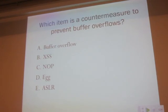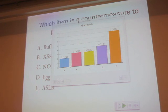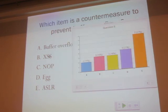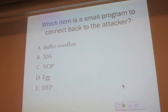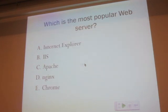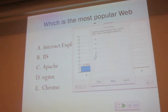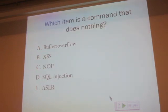Quiz review: The countermeasure to prevent buffer overflow exploitation is ASLR — address space layout randomization — running everything in a different part of memory every time. The egg is the small program that connects back to the attacker — the active ingredient. Apache is the most popular web server, used at small businesses because it's free; IIS is used by big corporations. A NOP — no operation — is a command that does nothing, used in NOP sleds to make it easier to hit the shellcode.